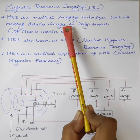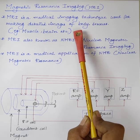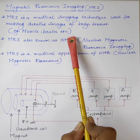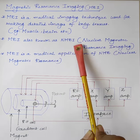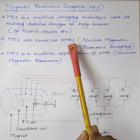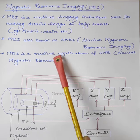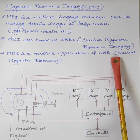MRI is a medical imaging technique used for making detailed images of body tissues such as muscle, brain, etc. MRI is also known as NMRI, that is Nuclear Magnetic Resonance Imaging, because MRI is a medical application of Nuclear Magnetic Resonance.